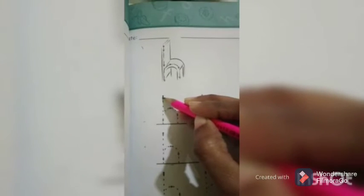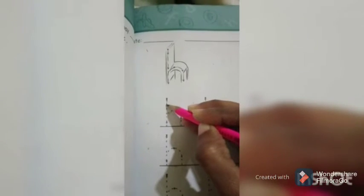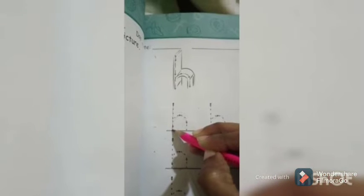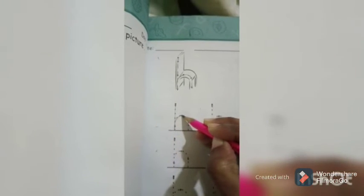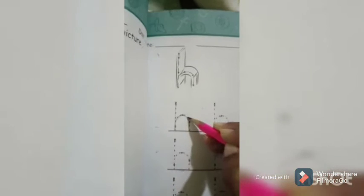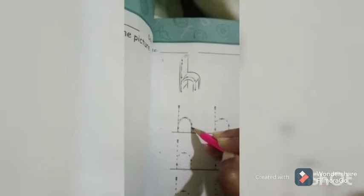Again, put the pencil on dot. Like this, come down. Turn and come down.